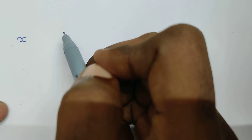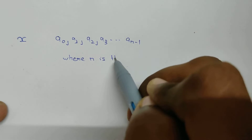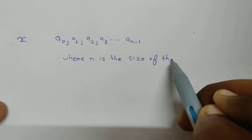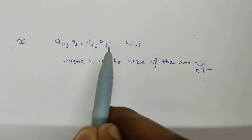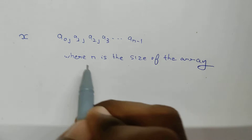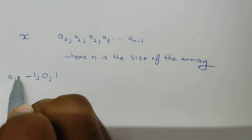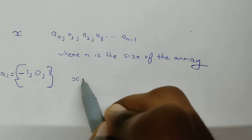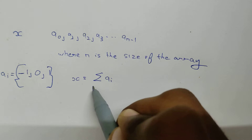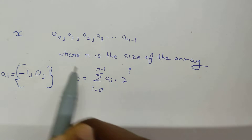We have to find an integer array a[0], a[1], a[2], ... a[n-1], where n is the size of the array we have to form. Each element of the array should be either -1, 0, or 1. Another condition is that the summation from i=0 to i=n-1 of a[i] * 2^i should be equal to the x given in the problem.